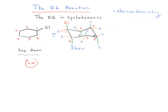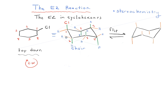Now we also have the chair-flipped form, which is not as simple as just flipping it on its back. In a chair flip, all equatorial groups become axial and all axial groups become equatorial. Let's draw in the axials first — headrest, footrest, then alternate up and down. Notice the orange equatorial groups from before are now axial, and the former axials become equatorial.